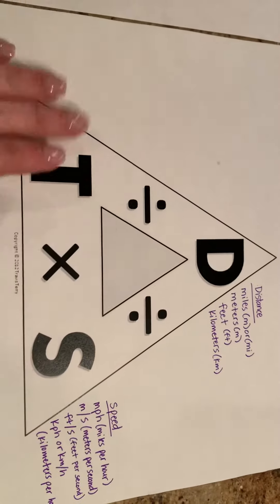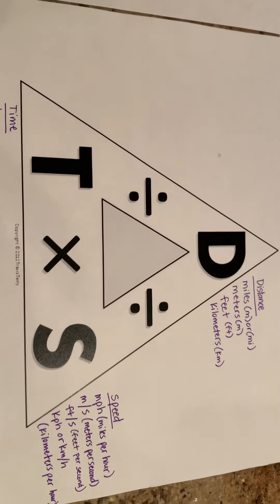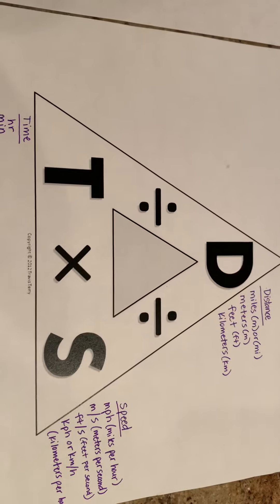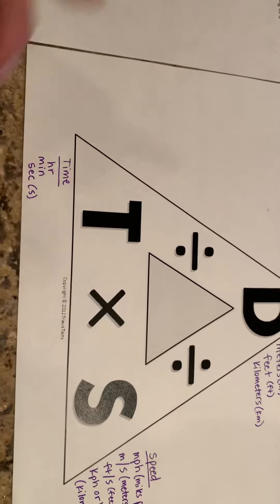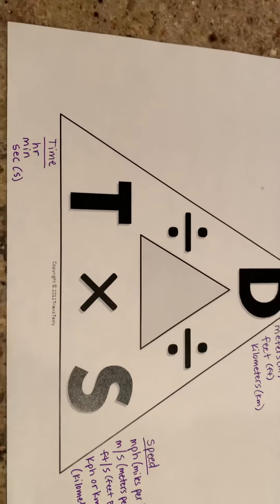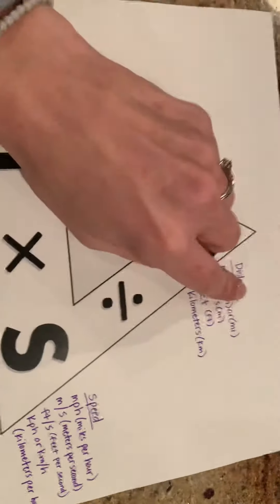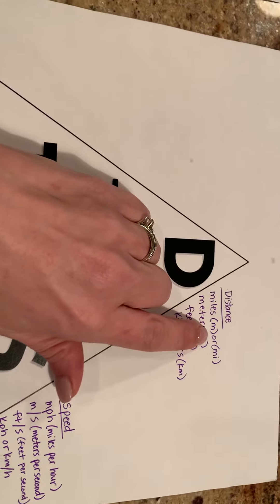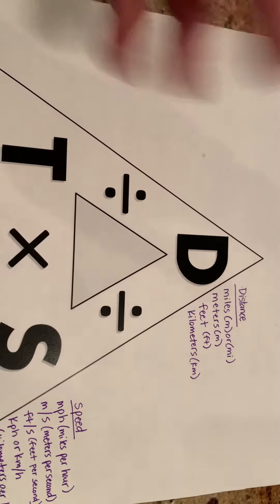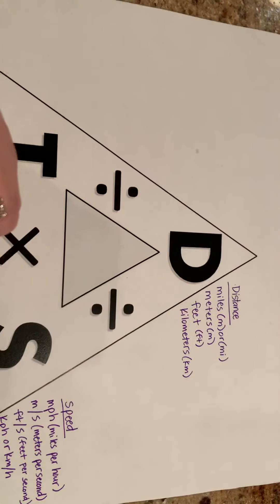So in distance, speed, and time, there's also units of measurement that are used for it. So time, obviously, that's going to be hours, minutes, and seconds. Distance, we're looking for miles, and here's how miles can be abbreviated with either an M or an MI. It just depends. Meters, feet, and kilometers.